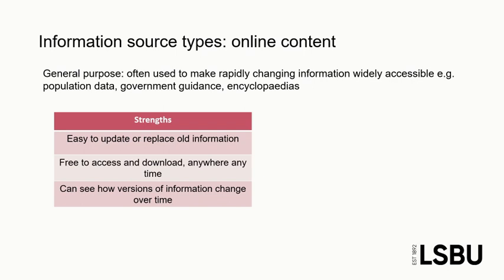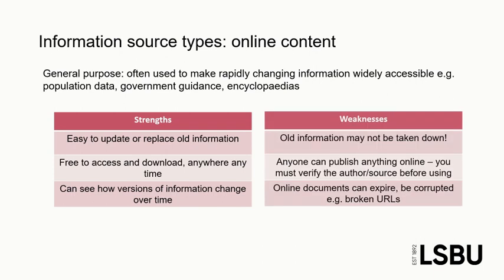Online scholarly content is also usually free and easy to access on the internet, for example government or institutional body websites. However, the advantages of online information can also be disadvantages. Even when it is easy to update a website, old information may not be removed or replaced. Similarly, when information is freely available on the internet, you cannot always be sure who has created it and for what purpose. It is very important that you evaluate the quality of a website or online resource before you use it.